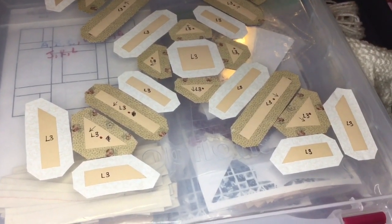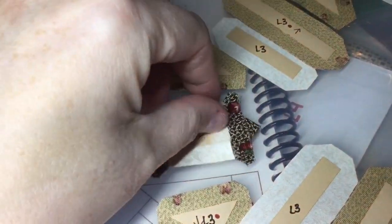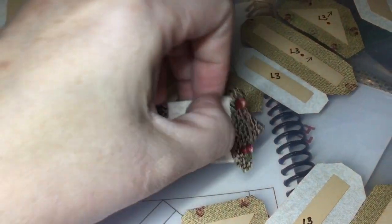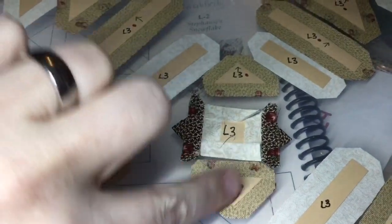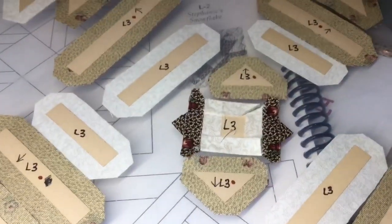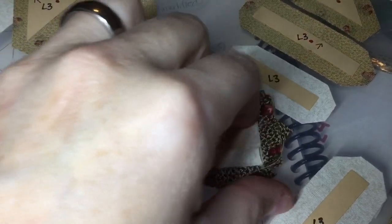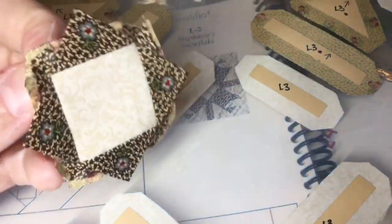I will get started with assembly of my center section. I've got the center started. I've attached the two opposing pieces and now I'm going to baste and attach my other two to form the center square. My center square section is all completed.